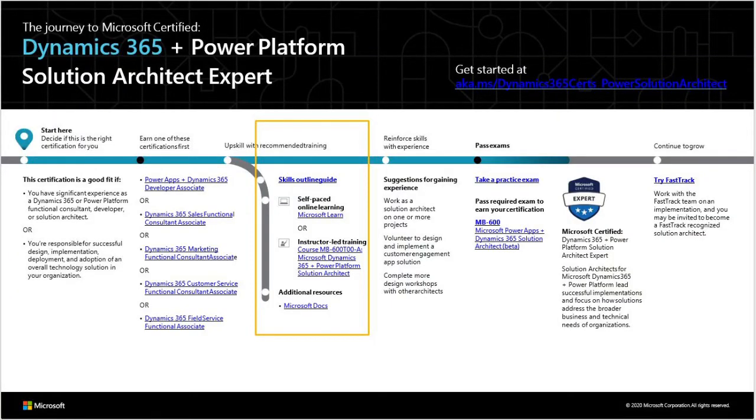Self-study is a good solution if you're comfortable studying by yourself and have time to sort through videos and study materials on your own. The other solution is instructor-led training, where you take the official MB600 training course delivered by a certified instructor. This is a good solution if you don't have a lot of time, as it dedicates a few focused days to preparation with someone to guide you through the materials and answer your questions.